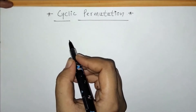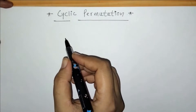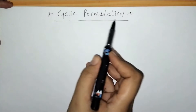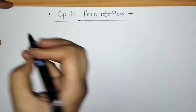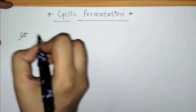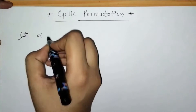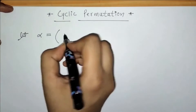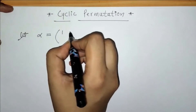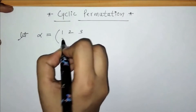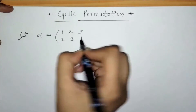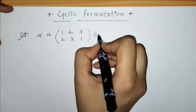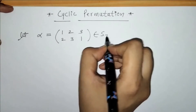Hello everyone, welcome to Unlock Maths. Today we have to discuss cyclic permutation. So let's consider if we have a permutation alpha, and this permutation belongs to the set S3.